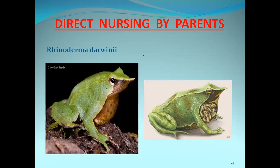A very peculiar type of direct nursing is seen in Rhinoderma darwinii. After laying the eggs, the male engulfs them, and the eggs are hidden in the vocal sac or sound box. The eggs are protected inside the vocal sac. Once the eggs hatch into larvae, the larvae are emitted through the mouth into the surrounding water. This is a very peculiar feature seen in Rhinoderma darwinii.